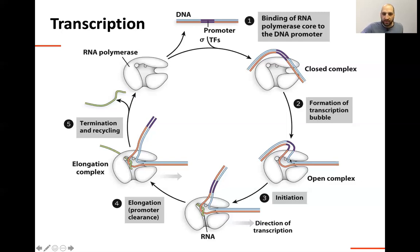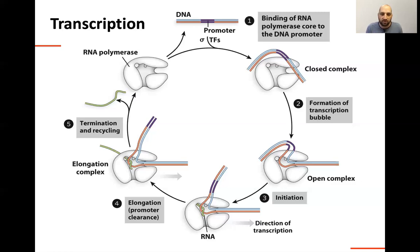After we've got the open complex, we can begin transcription. This is going to go for a predetermined amount of time — until the polymerase reaches a terminator. It's going to elongate for either a very long or very short time depending on where that terminator is. Elongation is what we call it when the RNA is being made. After elongation, there's a process called termination, which takes the RNA from the polymerase, brings the DNA strands back together, and removes the RNA polymerase so it can be recycled.